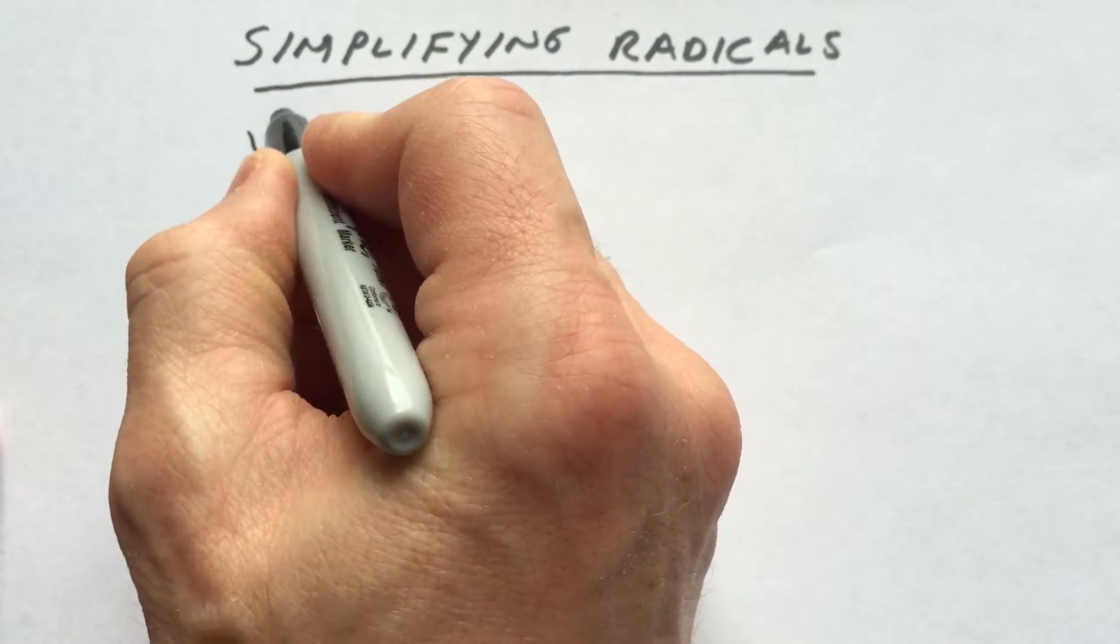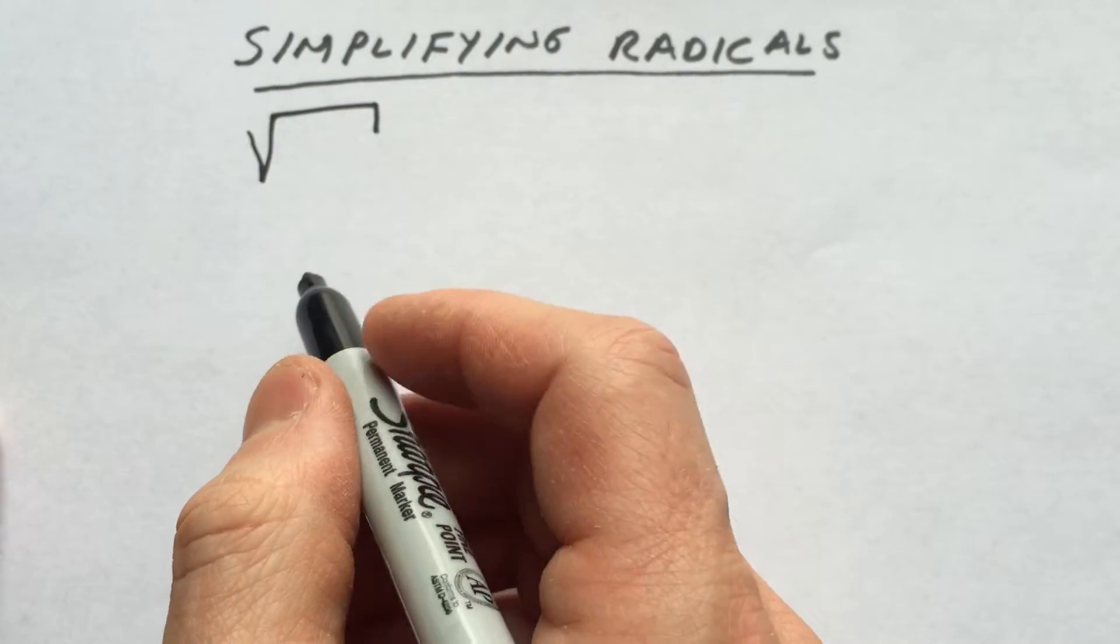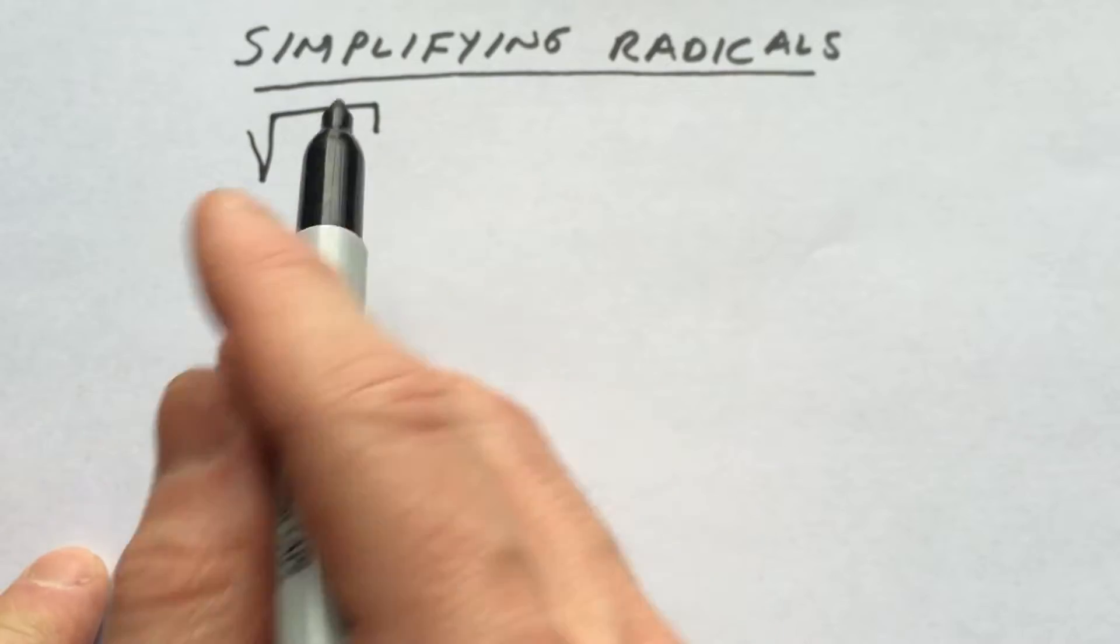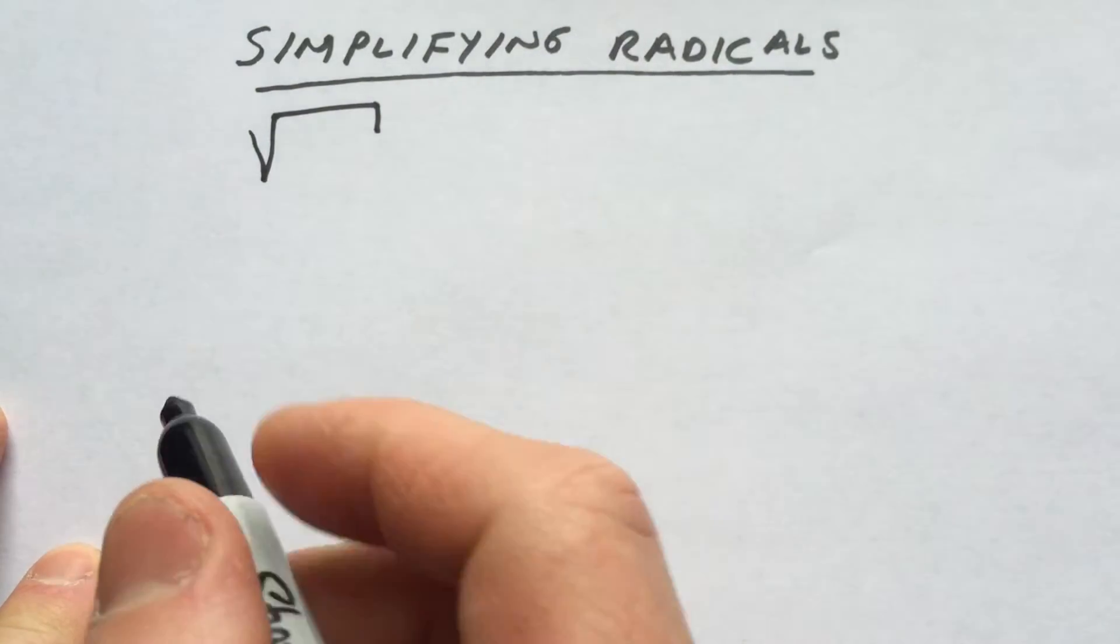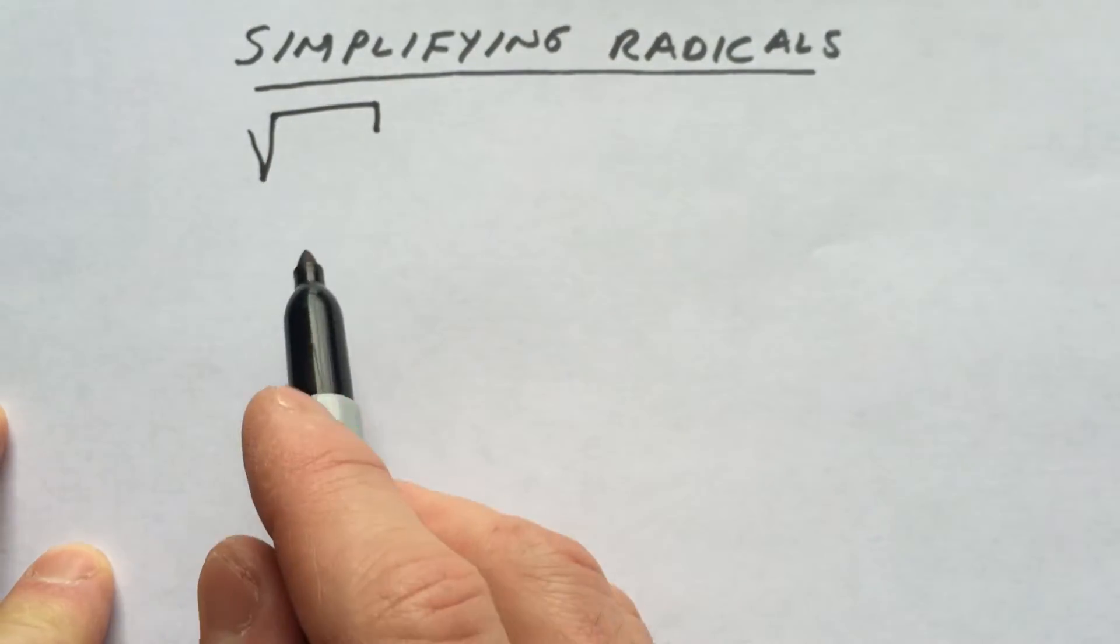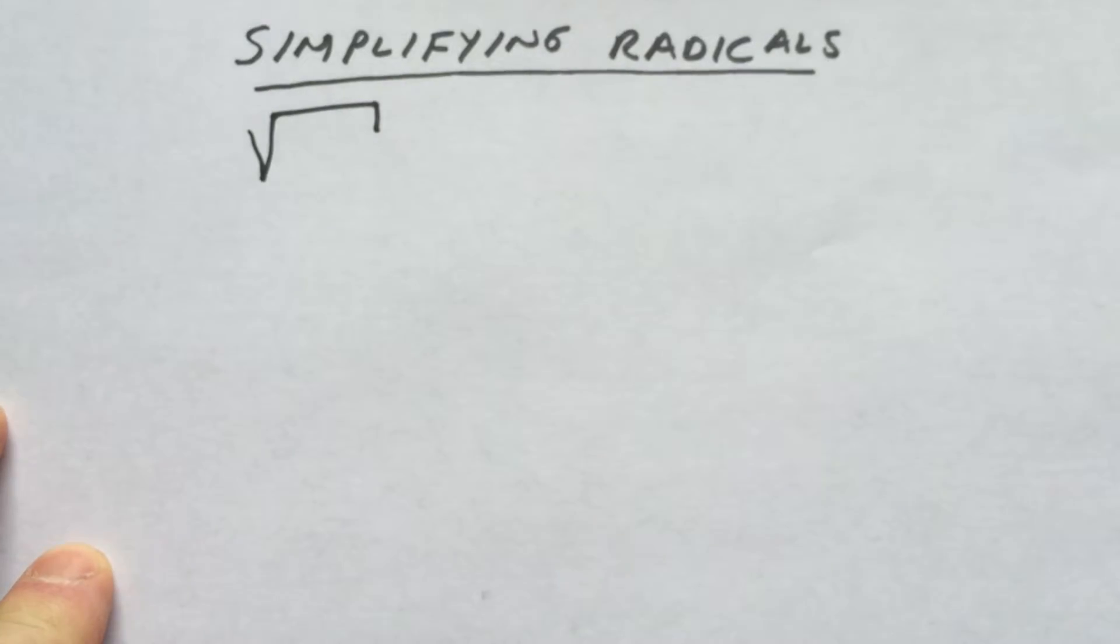A radical looks like this. Let's start off by simplifying square roots and then we can maybe look at cube roots and other types of radicals like that.